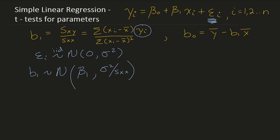Similarly, using the normality assumption for the error terms, we can conclude that b0 is also normally distributed. b0 depends on y through both ȳ and b1, so b0 is normally distributed with mean β0 — it is an unbiased estimator — and variance σ² times (1/n + x̄²/S_xx).